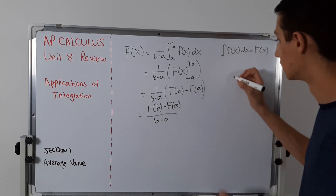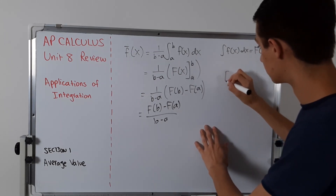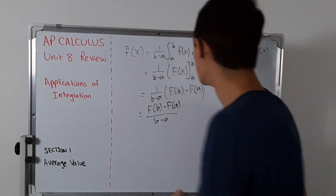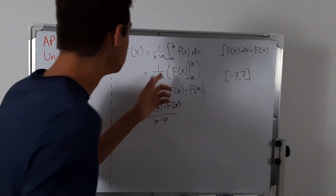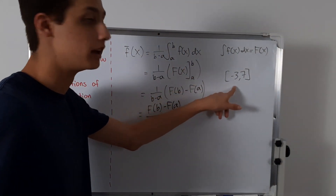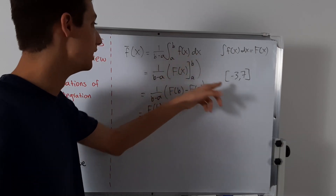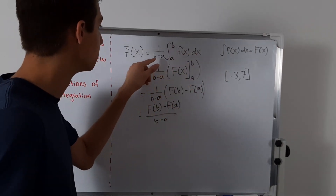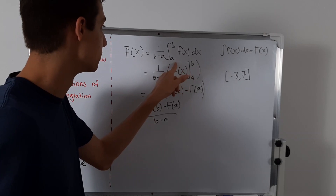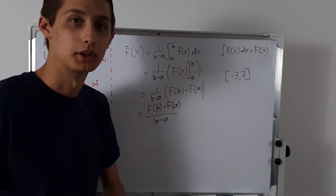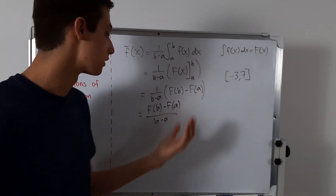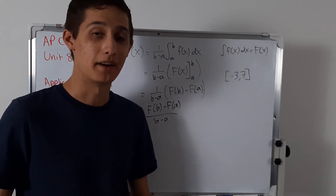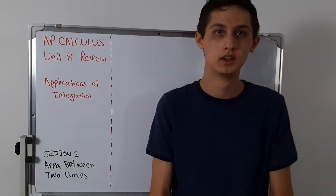For example, if your interval is from negative 3 to 7, you do 1 over (7 minus negative 3), which is 1 over 10, because that interval is 10 units long. So you do 1 over 10 times the integral from negative 3 to 7 of whatever function they give you. That's the average value of a function.